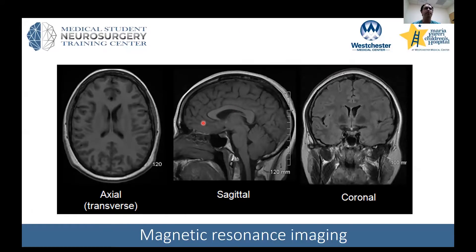Let's focus a little bit more on MRI. Here we have again the three different projections: axial, sagittal, and coronal. MRIs are much more detailed than CAT scans. They avoid radiation, but they're usually a little bit harder to access and take a little bit longer. We'll show how these can be very useful.